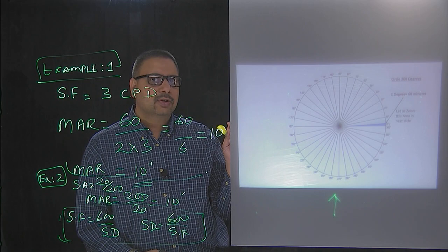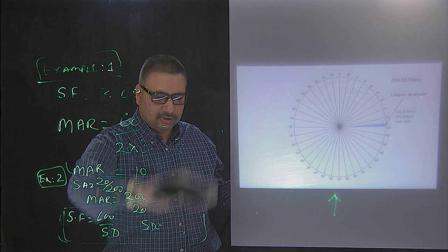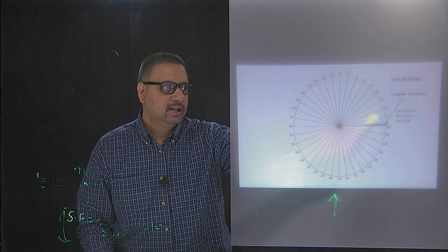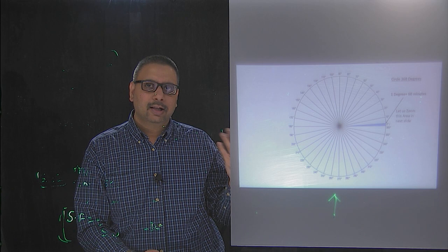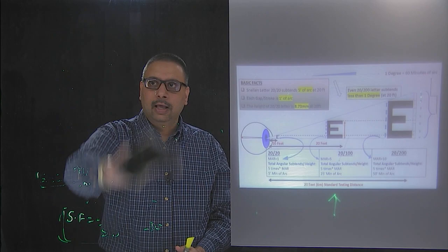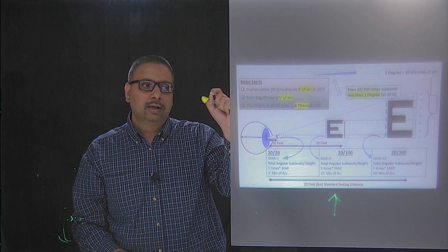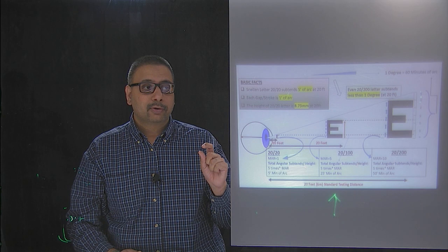People are often confused about the size of letters. A circle has 360 degrees. One degree is a really tiny portion of that. One degree can be subdivided into 60 minutes. Most letters you encounter in an eye chart are actually smaller than one degree. A Snellen 20/20 letter subtends 5 minutes of arc at 20 feet, and each gap or stroke subtends 1 minute of arc. The height of the 20/20 letter is about 8.73 millimeters at 20 feet.